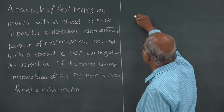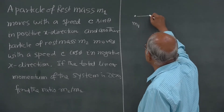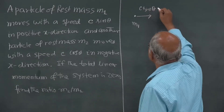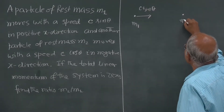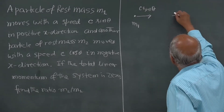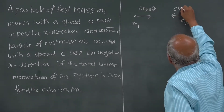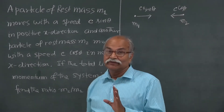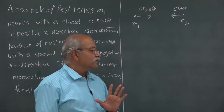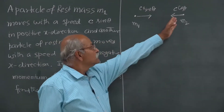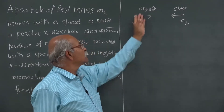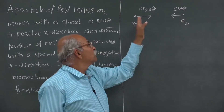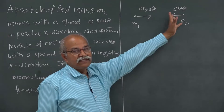We have a particle of rest mass m1 going in one direction with speed c·sinθ, and another particle of rest mass m2 going with speed c·cosθ, and the total linear momentum is 0. In non-relativistic dynamics, it is very simple: m1 times this should equal m2 times this, and therefore m2/m1 should be sinθ/cosθ, which is tanθ.